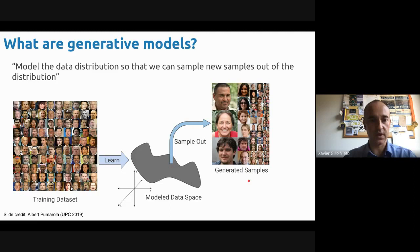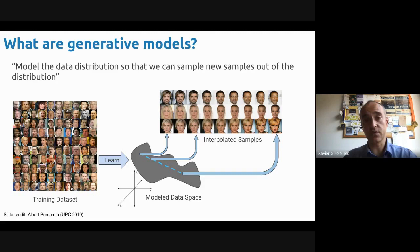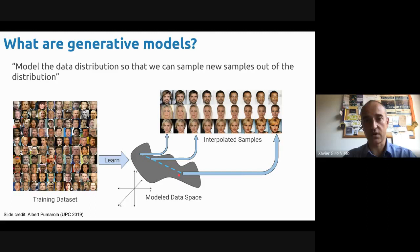Not only can we generate new samples, but we will also be able to interpolate from one sample to another. For example, here you see how you can move from one face of a famous character into another one. In this data space we'll be learning, we'll be able to interpolate to generate samples between any two points of this space. So you can see all the evolutions.